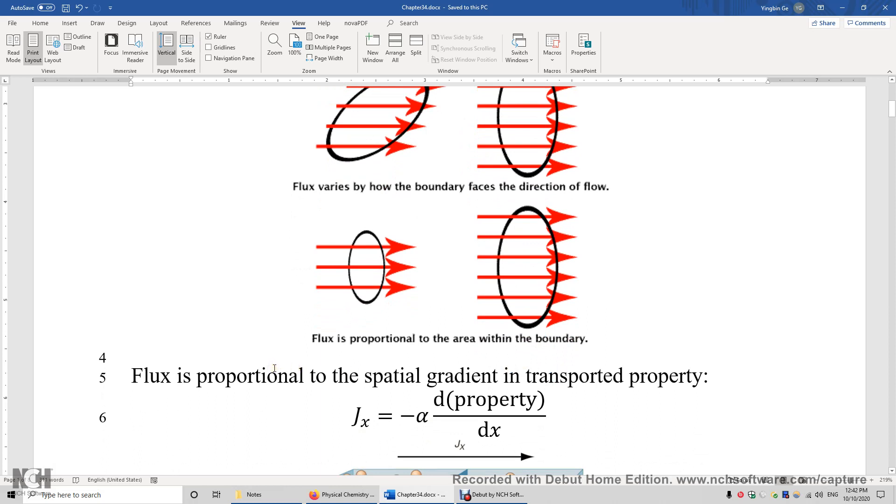Flux is proportional to the spatial gradient in the transported property. So let's use this surface area as an example. If you have a higher pressure of gas on here, lower pressure of gas here, and then we observe this flow.